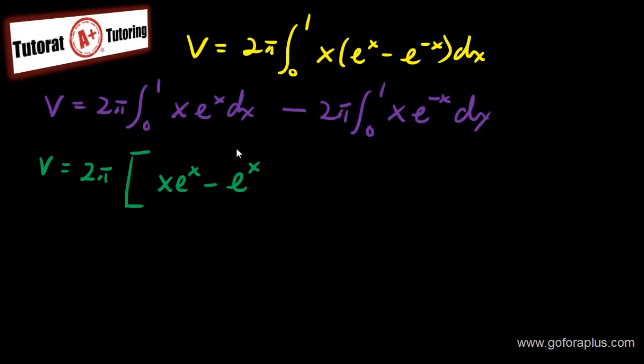So I have this part right here. This is my integral before, but then integral of e to the x is e to the x. Now, on the other side, so this is from 0 to 1, subtract 2 pi.